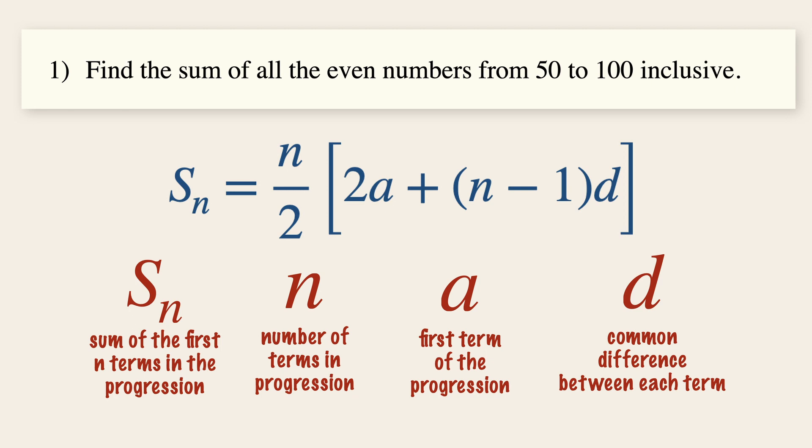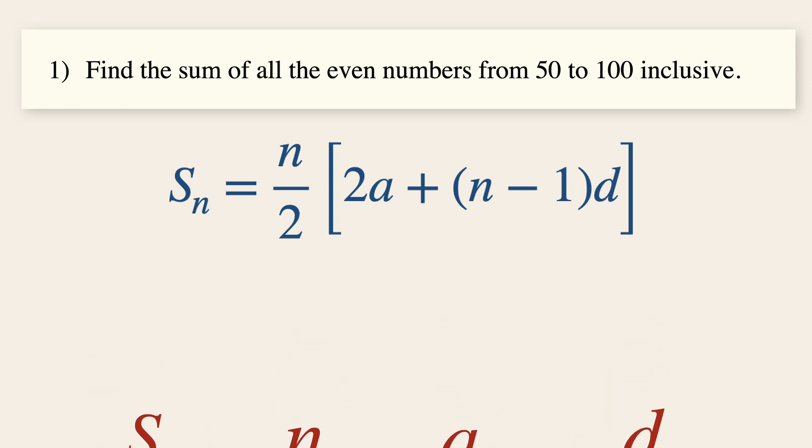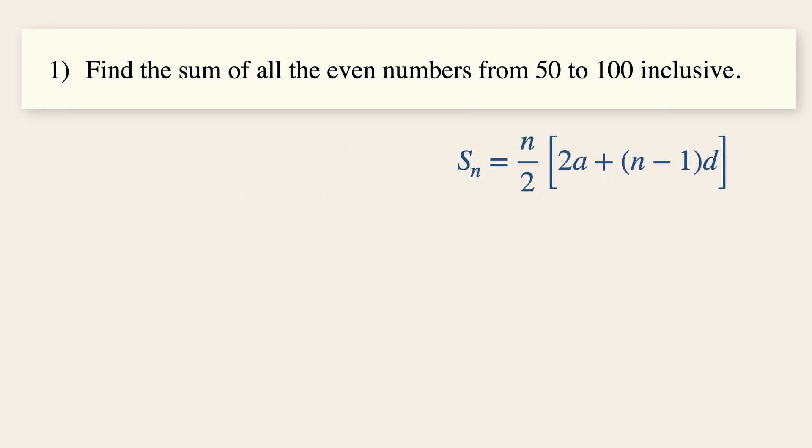Coming back to this example, to visualize things better, we are going to list just a few terms in the progression, starting with 50, 51, 52, 53, 54, and so on until 100.